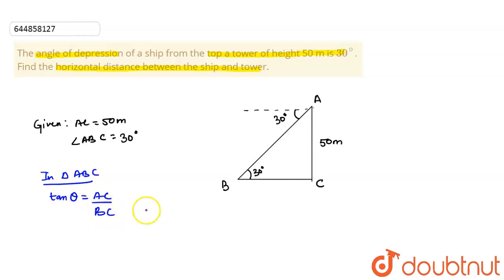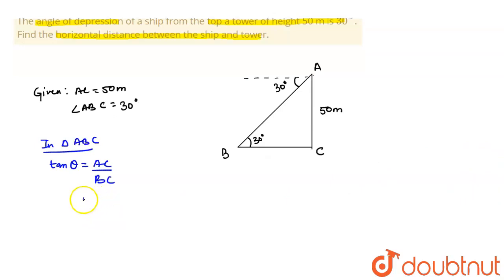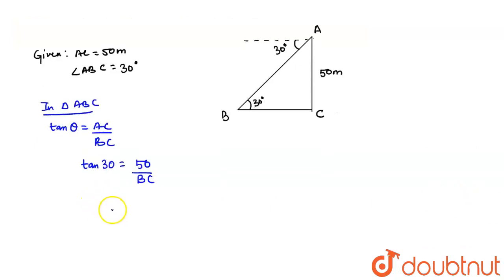So this means tan 30 is equal to AC, which is 50, upon BC. So tan 30 is equal to 1 by root 3. BC is equal to 50 by BC. So this implies BC would be equal to 50 root 3 meters.